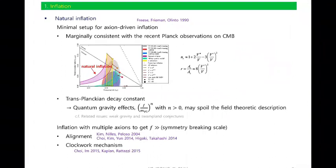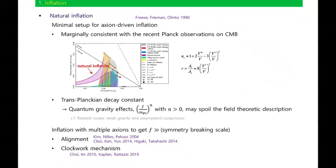The axion was already considered as an inflaton, and the minimal setup of axion-driven inflation is called natural inflation. However, natural inflation is only marginally consistent with recent Planck observations on CMB.